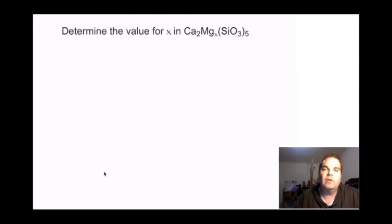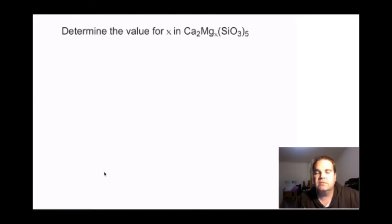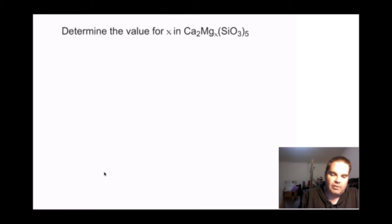Here we've got a formula Ca2MgxSiO3(5), and we need to determine the value for x. First, calculate the silicate charge: SiO3 has 1 silicon at plus 4 and 3 oxygens at minus 2. Plus 4 and minus 6 gives a negative 2 charge on the silicate.